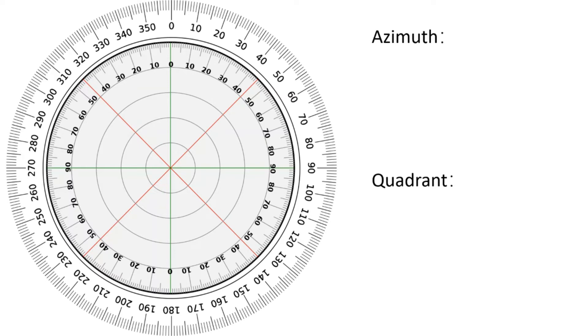Let's teach some examples. What is the quadrant reading when azimuth reading is north 50 degrees east? Apparently, it is north 50 degrees east too.